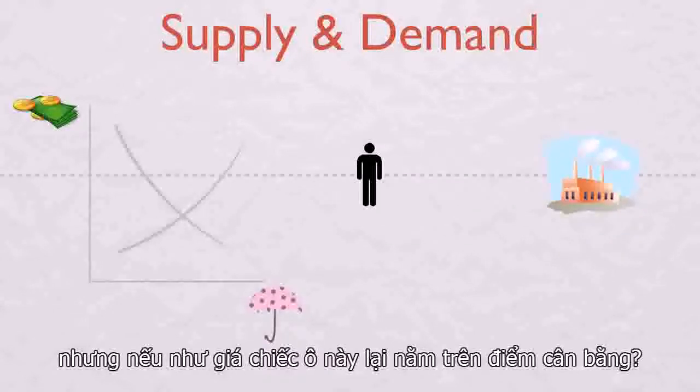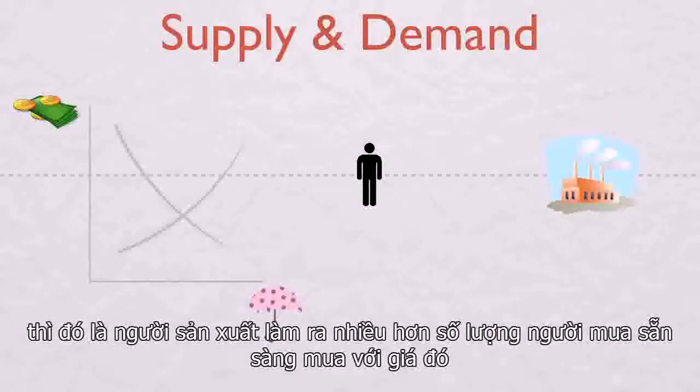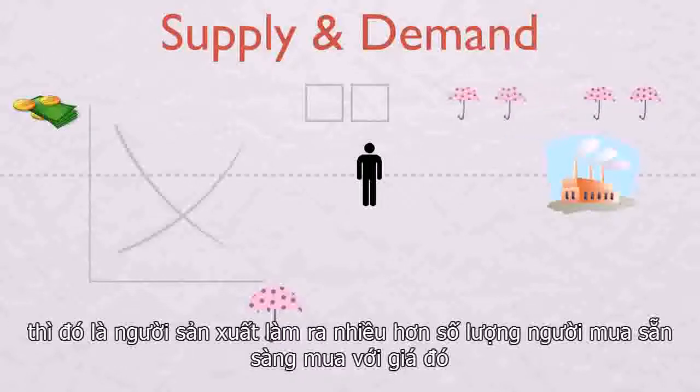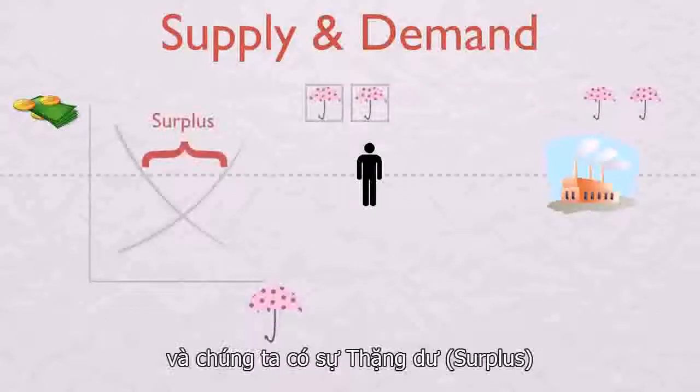What if the price of umbrellas is higher than the market clearing price? Then producers make more umbrellas than buyers are willing to buy at that price, and we have a surplus.